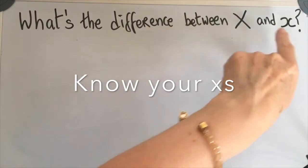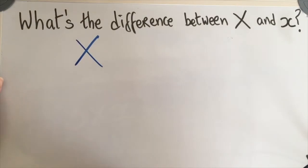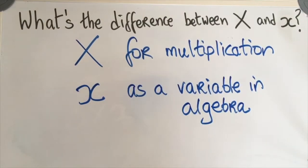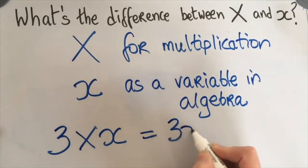What is the difference between these two symbols? This symbol is used for multiplication and this symbol is used as a variable in algebra. So when we come across this situation there's no confusion. This means 3 multiplied by x but it does look awkward, so therefore we condense it to be 3x.